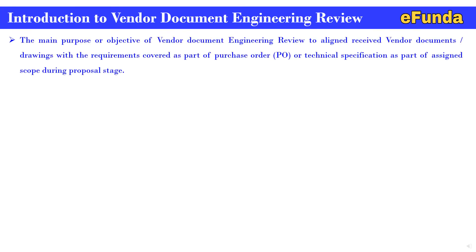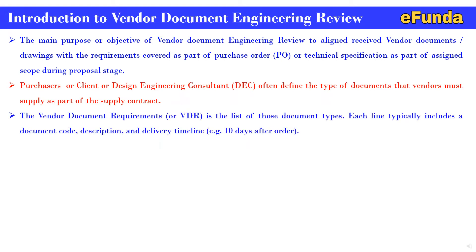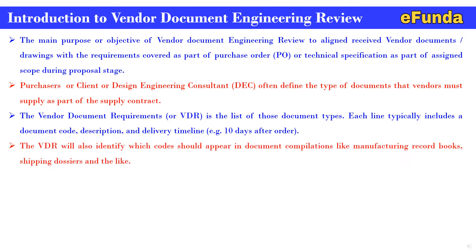The main purpose of vendor document engineering review is to align received vendor documents or drawings with requirements covered as part of the purchase order (PO) or technical specification. During the proposal stage, the purchaser, client, or design engineering consultant (DEC) defines the type of documents the vendor must supply as part of the supply contract. The vendor document requirement (VDR) is the list of those document types — each line typically includes a document code, description, and delivery time, for example, 10 days after the order.